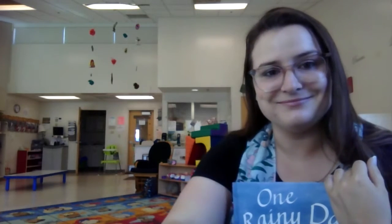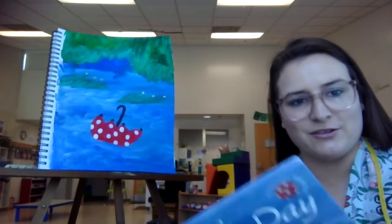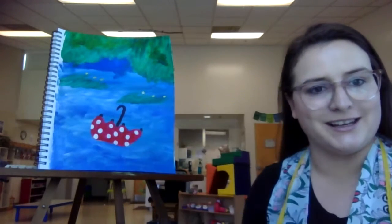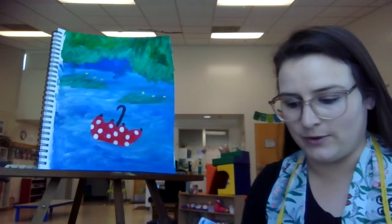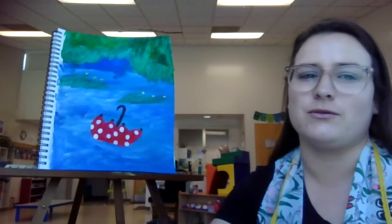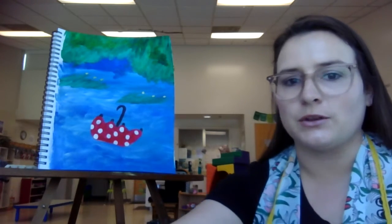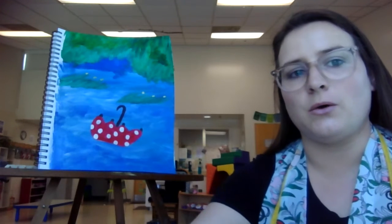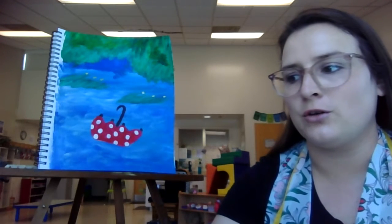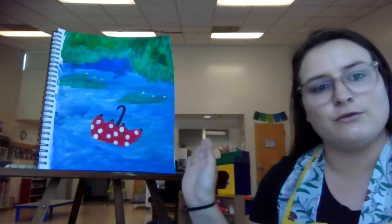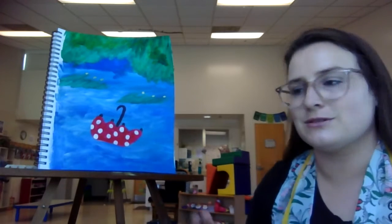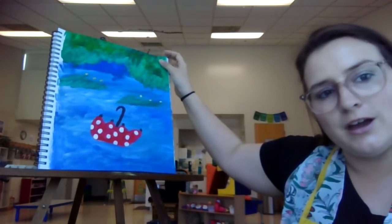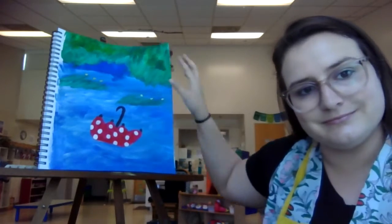All right, everybody. So we've read our story, One Rainy Day. Hopefully our rainy days will slow down. So I thought we could recreate a scene from the book where the umbrella is floating down the river. I thought that was really cute. So this is what I've already kind of come up with, and we're going to do this together. All right, let's get started.